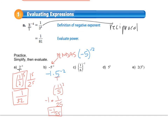For letter C: negative exponents mean do the reciprocal. The reciprocal of 1 over 6 is 6 over 1, or just 6, and then raise that to the third power. I don't need parentheses here because I don't have a fraction anymore. 6 to the third is 216. For letter D: anything to the 0 power is 1, so there's nothing to do — the answer is 1.